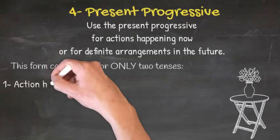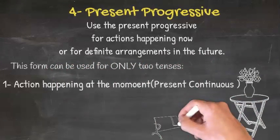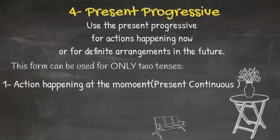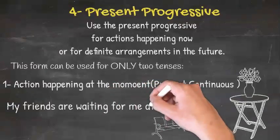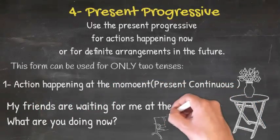Number one, actions happening at the present moment. We call it present continuous. For example, my friends are waiting for me at the airport. What are you doing now?